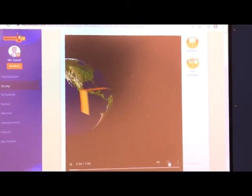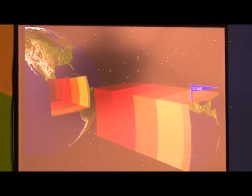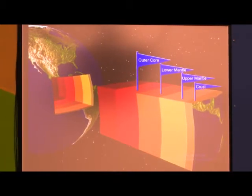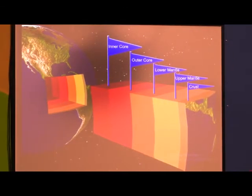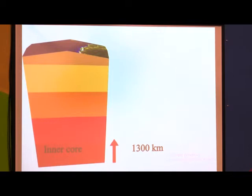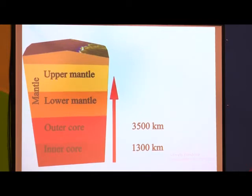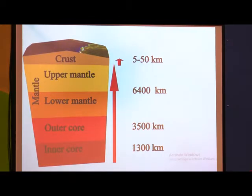The earth's interior consists of rocks and metals and is made up of five main layers. The crust is where we live. Next comes the upper mantle or asthenosphere, then the lower mantle, followed by the outer core. Earth has a diameter of 12,756 km. The inner core extends up to 1,300 km, the outer core up to 3,500 km, and the mantle up to 6,400 km. The crust varies from 5 to 50 km in depth.